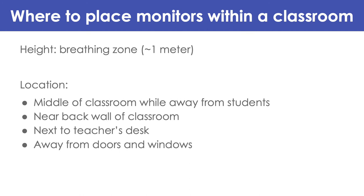Now that we've covered where within a school to put monitors, we can look at where to place monitors within a classroom. In all cases, placing a monitor in the breathing zone of students is the best practice — at the height of a sitting student, not a standing one. There is a lot of agreement in literature on placing monitors in the breathing zone of a seated student, but less agreement on lateral placement within a classroom, because there are many factors influencing readings, including students tampering with monitors and doors or windows opening causing drafts.